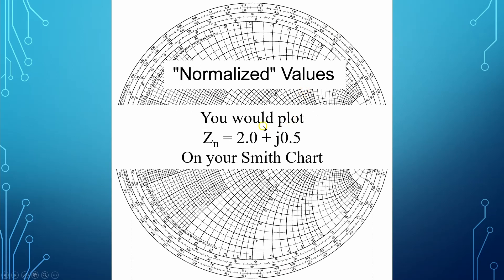You would plot on the Smith chart 2.0 plus J0.5. Why do they do that? That is so that the Smith chart can be used with any transmission line. If you're dealing with a 93-ohm transmission line, you divide by 93. It makes the Smith chart usable with any transmission line that you happen to be working with.